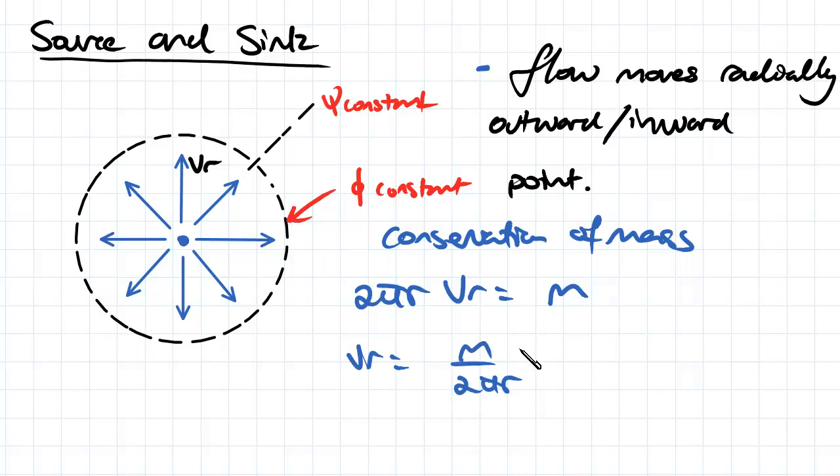So m is actually the rate of flow. If m is larger, we have a larger rate of flow; if m is smaller, we have a smaller rate of flow.